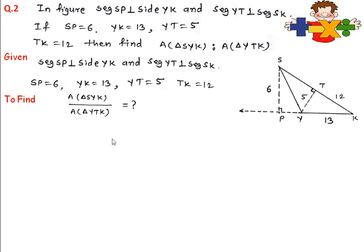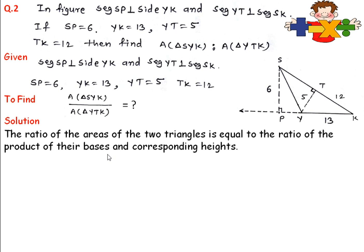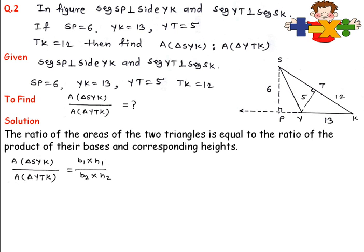What we have to find: we have to find the ratio of area of triangle SYK upon area of triangle YTK. In the solution, the ratio of the areas of the two triangles equals the ratio of the product of their bases and corresponding heights. So we write: area of triangle SYK upon area of triangle YTK equals B1 times H1 upon B2 times H2. For triangle SYK, base is YK and height is SP; for the second triangle, base is TK and height is TY.